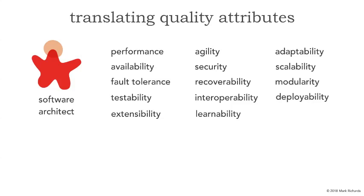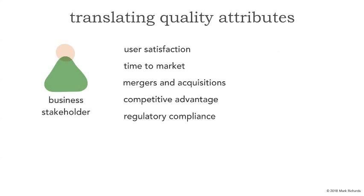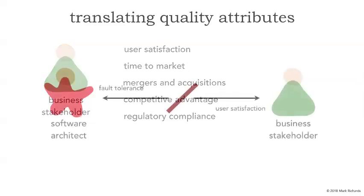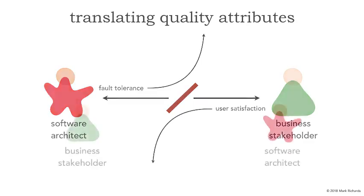Testability, interoperability, modularity, even agility — are these concerns for business stakeholders? Because business stakeholders generally talk in these kinds of terms: user satisfaction, time to market, mergers and acquisitions, higher competitive advantage, regulatory compliance. These are the concerns of a business stakeholder. What we end up getting typically in most situations is this lost-in-translation aspect, where we talk in one language — fault tolerance, testability, deployability — and the business stakeholders are talking in another language: user satisfaction or competitive advantage. So let's explore how these ilities translate to a business stakeholder.